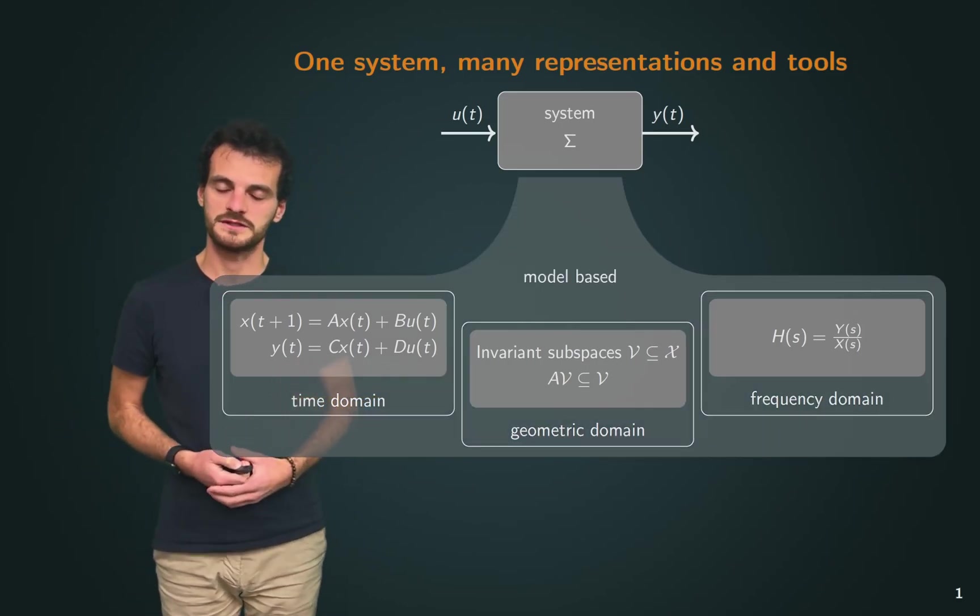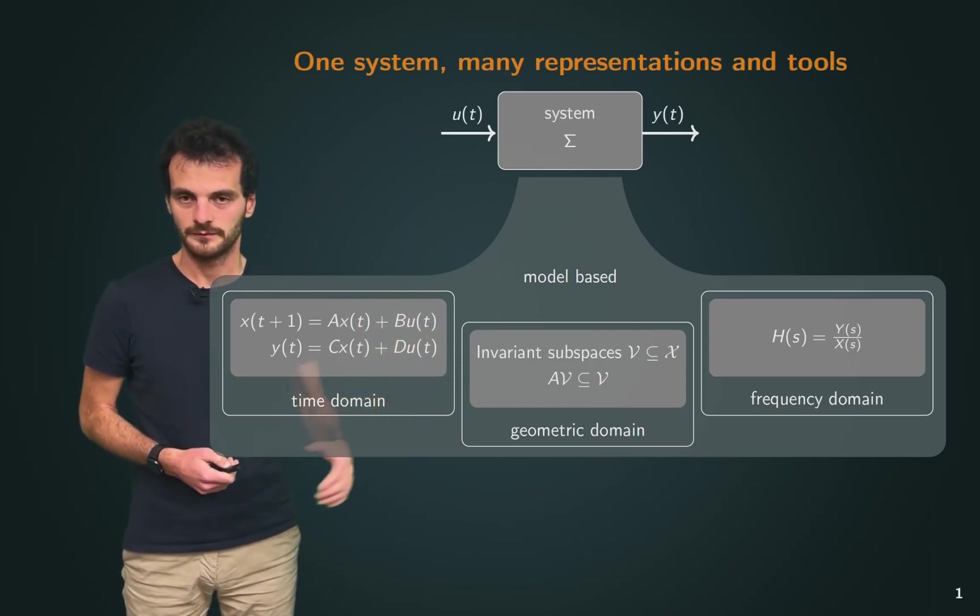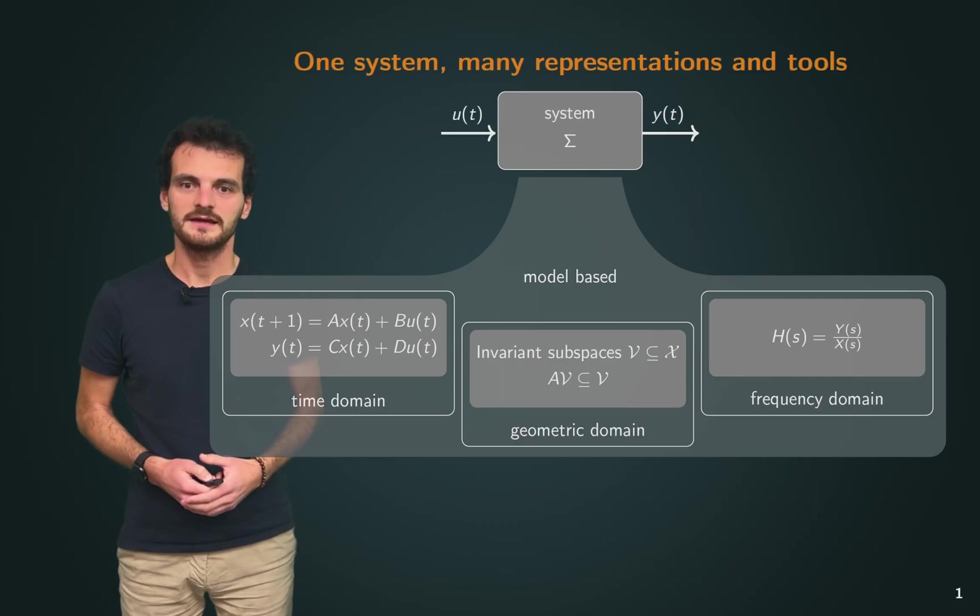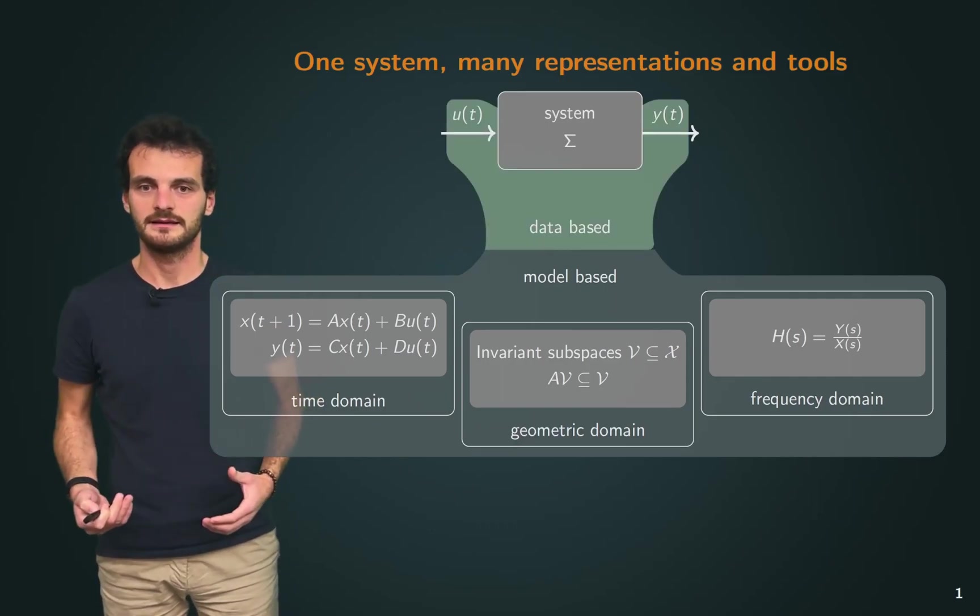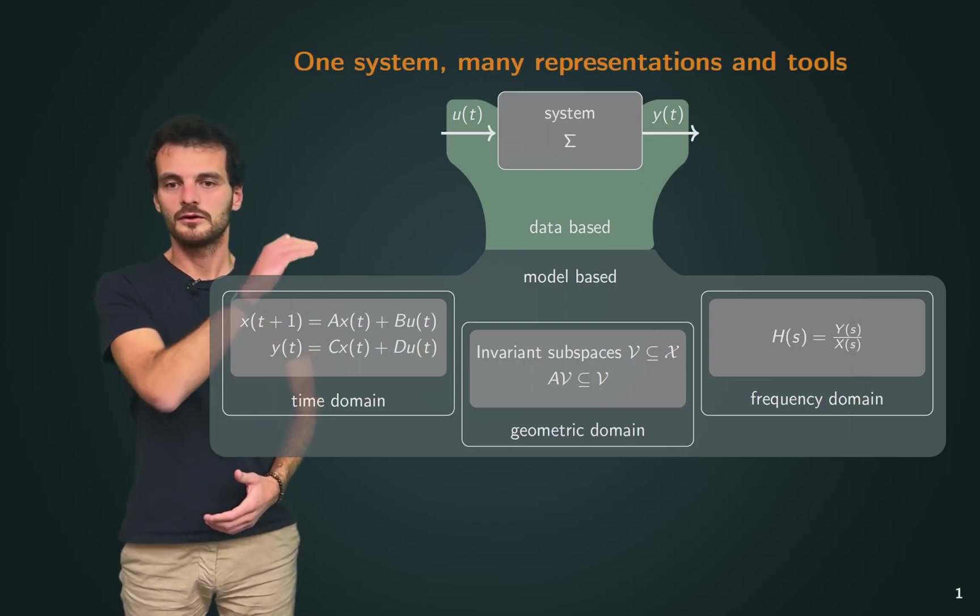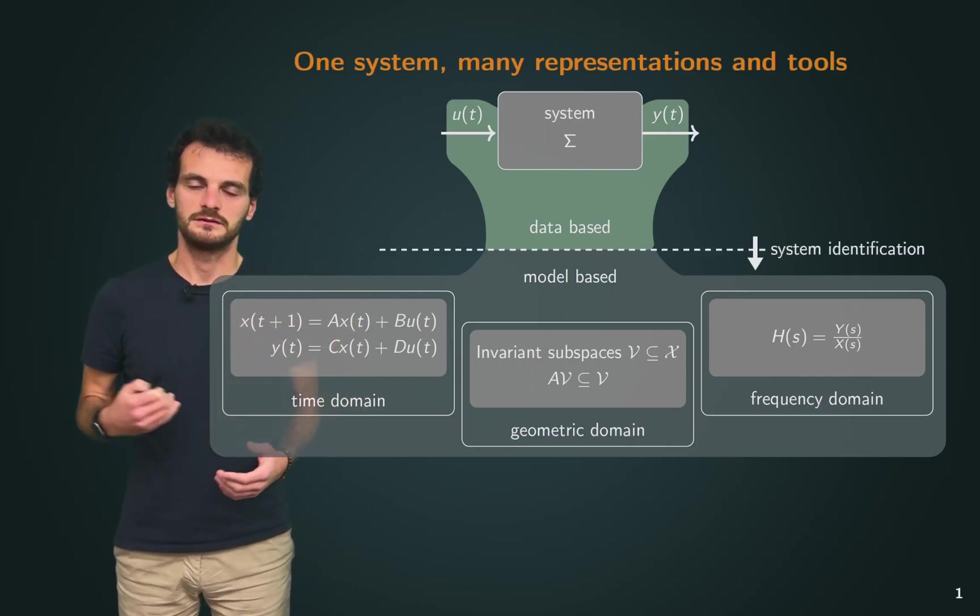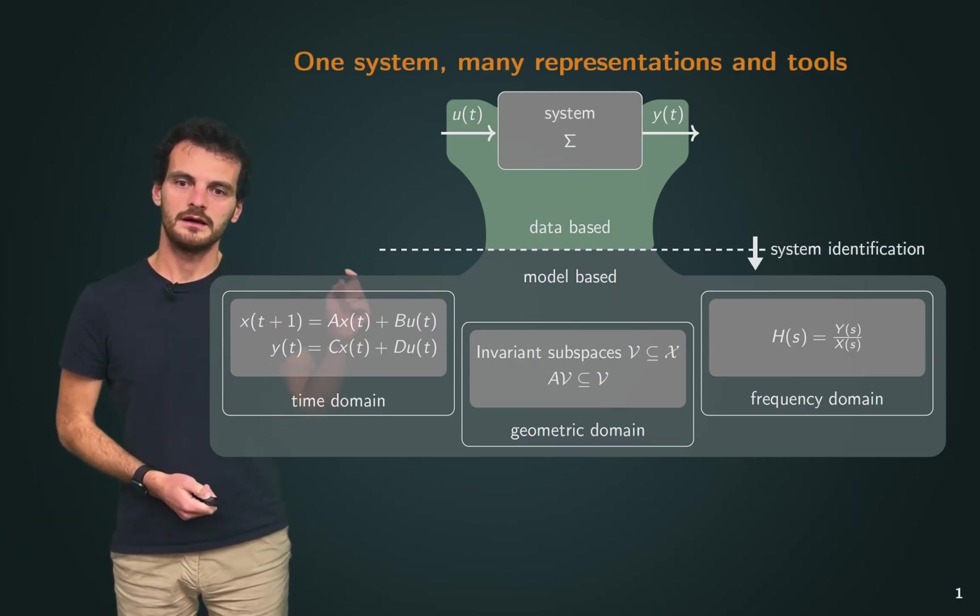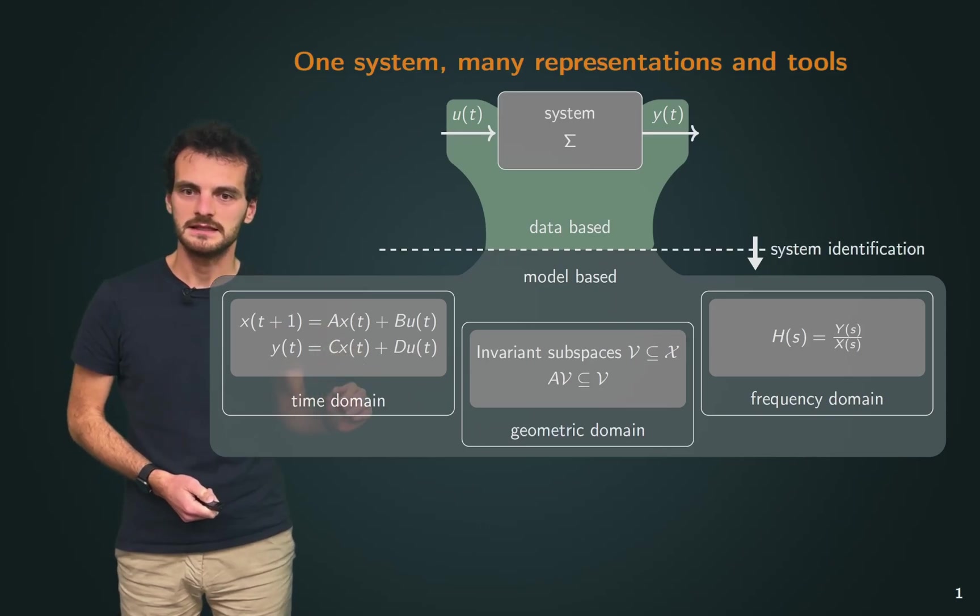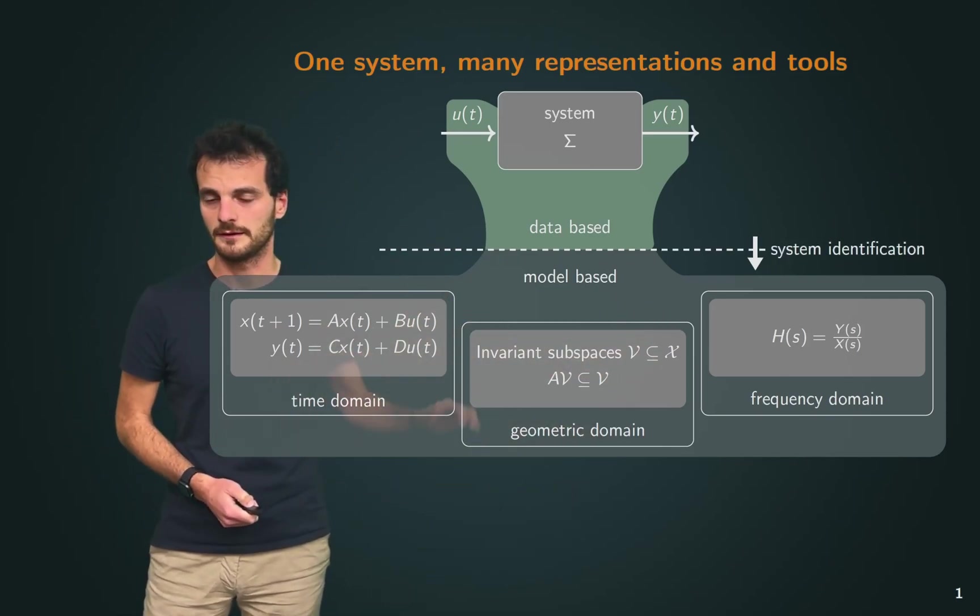Now what all these approaches have in common is the underlying assumption of a model of the system. This might not always be the case, and when a model is not available, perhaps we can instead collect data, and we can always go from a data-based representation to a model-based representation through system identification, which would allow us to find matrices A, B, and C, or the poles and zeros of the system from data.